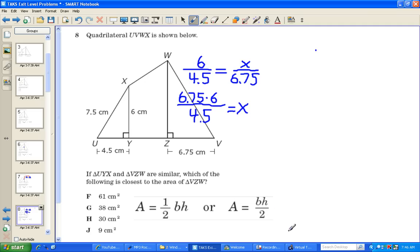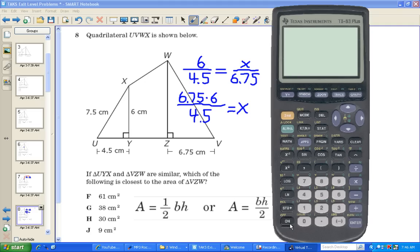And for this, to calculate what that is, we can bring out our calculator, which is our virtual TI-83 Plus, and we multiply the dimensions here, 6.75 times 6, divided by 4.5. And what do we get for that? We get 9. So is 9 our correct answer? We see answer J is 9.